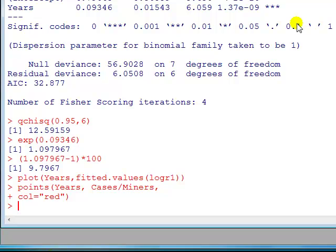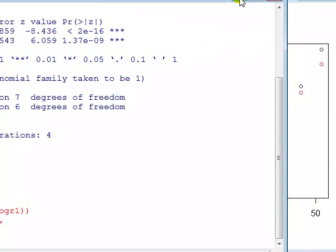Now how does that compare to the observed values? So to get that, we plot the points, use the points command, years which is the x axis, cases divided by miners, so that's observed proportions, and we want red circles, and we get this.